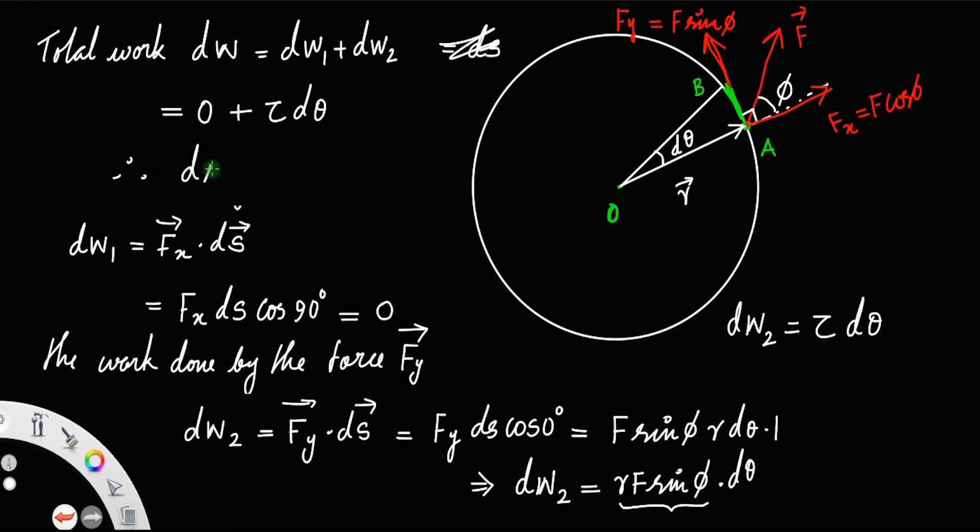Therefore, the work done dW is equal to τ dθ. So work done will be torque times the angular displacement.